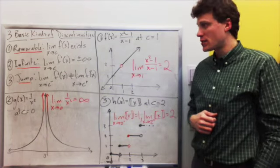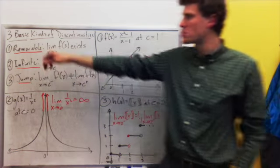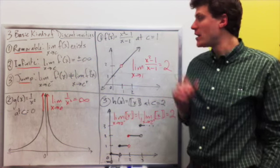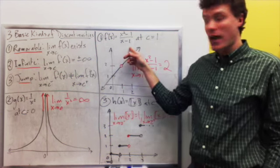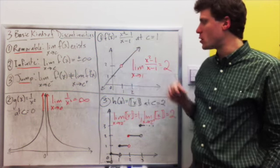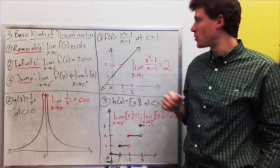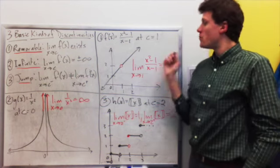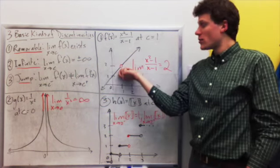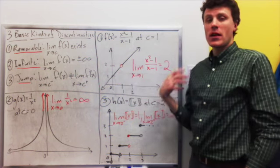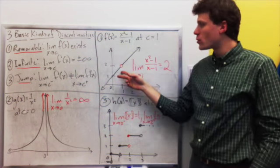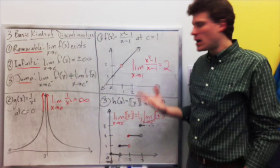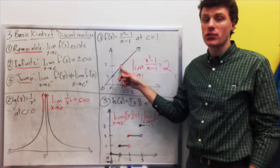Now, there are three basic kinds of discontinuities that we tend to run into in calculus. These are called removable, infinite, and jump. A removable discontinuity occurs when the limit at c actually does exist. For example, with the function x squared minus 1 over x minus 1 at c equal to 1, this function is not defined at x equal to 1. However, the limit as we approach 1 does exist and is equal to 2. It's called removable because I could just redefine the function at 1 to be equal to 2 and then it would be continuous. Even if this function were defined to be some other value at 1 — for example, if I defined f of 1 to be 3 — I could make it continuous by redefining f of 1 to be 2.